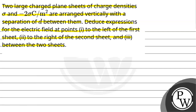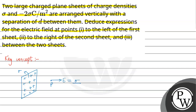Let us have the key concept for the given question. If you take a large plane sheet of charge, remember that the charge is positively charged and the charge density is sigma. The electric field will be sigma by 2 epsilon naught. With the help of this key concept, we will proceed further.